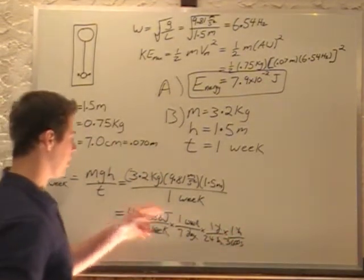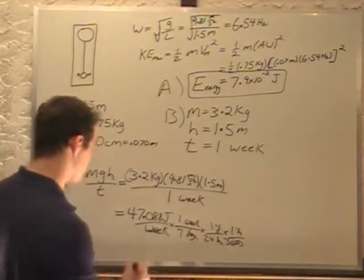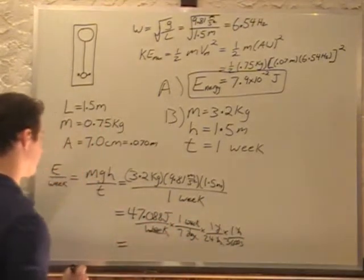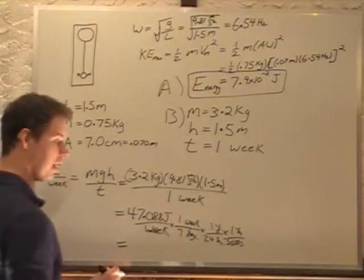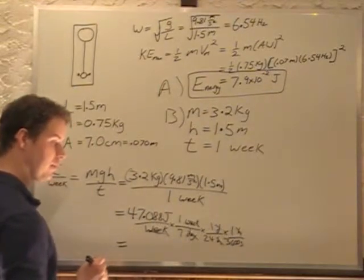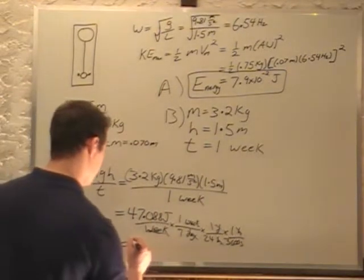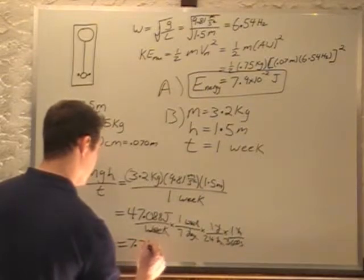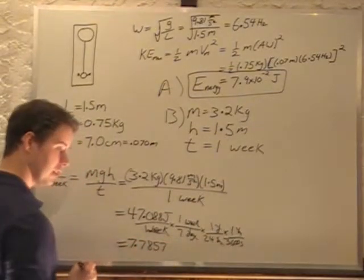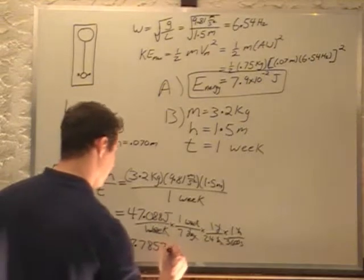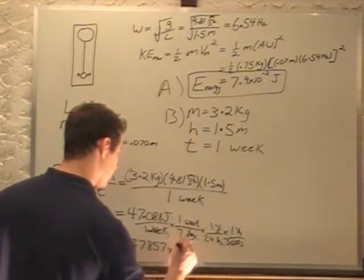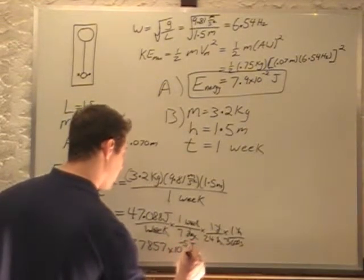Hours cancel. So we divide 47.088 divided by 7, divided by 24, divided by 3600. Gives us an energy of 7.7857 times 10 to the minus 5 joules per second.